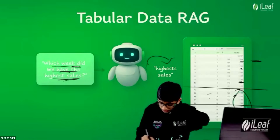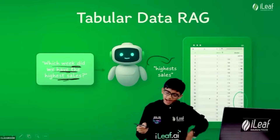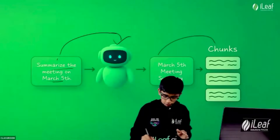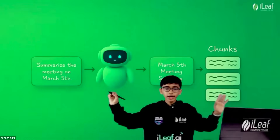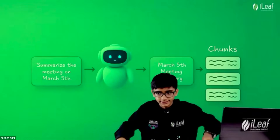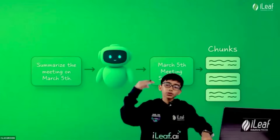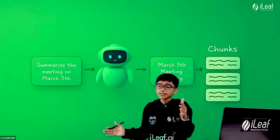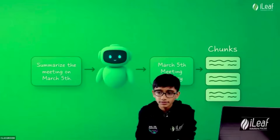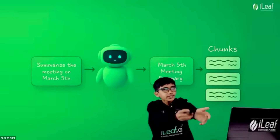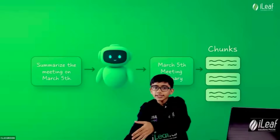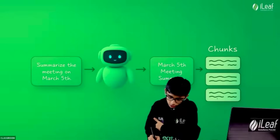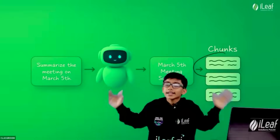So what agentic RAG does is, rather than converting everything into chunks, it keeps everything in order and looks at the whole picture. For example, if we give it the full information about a one-hour meeting and tell it to summarize — if that meeting is converted into 100 small parts, can it summarize the full meeting? No, because it's not looking at the full data at once, just a small part at a time.